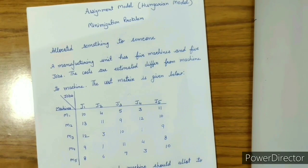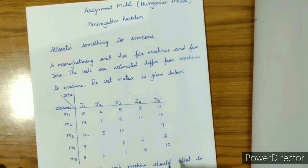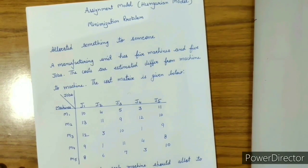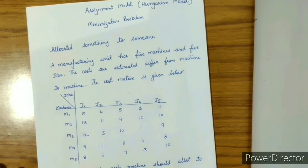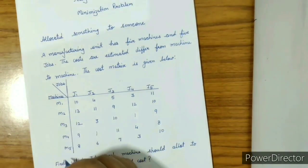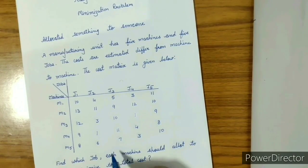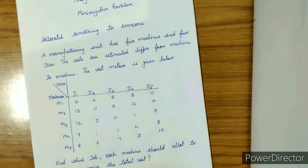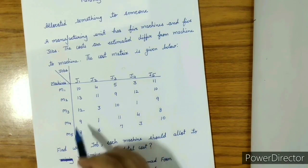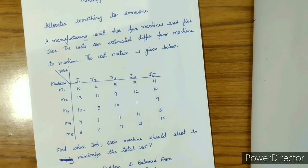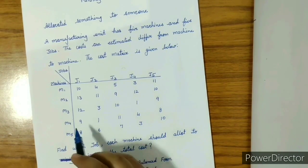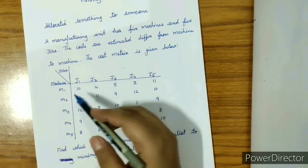In the next step, we have to justify whether the problem is balanced or unbalanced. If it is unbalanced, then it must be converted into balanced form, meaning the matrix should be square — that is, the number of jobs equals the number of machines, or rows equal columns. Here in the given problem, we have a balanced problem with five jobs and five machines.